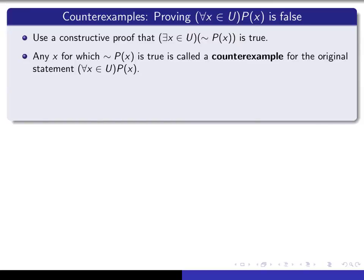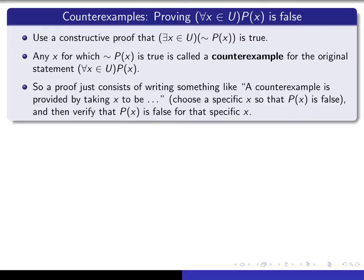Now any x for which the negation of P(x) is true is referred to as a counterexample for the original statement that you're trying to show is false. So all you have to do in a proof is write something like a counterexample is provided by taking x to be... and then you fill in the specific x for which P(x) turns out to be false, and then verify that P(x) is false for that specific x.